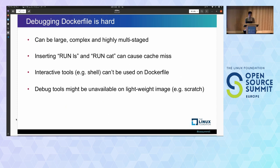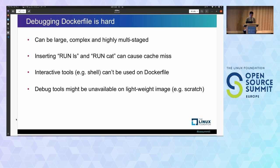First of all, debugging Dockerfile is hard. It's even more true if you write a large and complex Dockerfile, and it's almost impossible to write a correct Dockerfile without cycles of debugging and fixing. For inspecting the internal state of a Dockerfile, you might modify it and insert commands like RUN ls or RUN cat. But modifying Dockerfile can sometimes cause cache misses, requiring re-running the Dockerfile again, which costs extra time. The lack of tooling in Dockerfile also makes debugging harder.